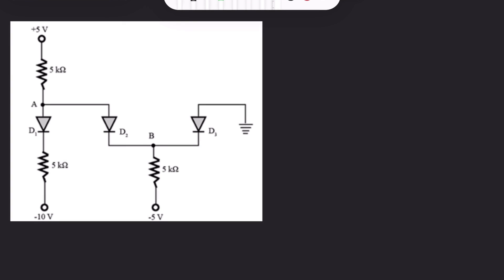This is a basic diode question where we need to find which diode is conducting and which is not, and based on that find the currents through the diodes. For this problem we use the ideal diode model: if the diode is conducting, the voltage drop across it must be zero and the current must be some non-zero quantity; if it is not conducting, the current through the diode must be zero.